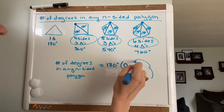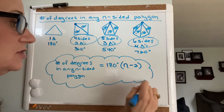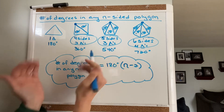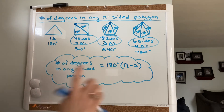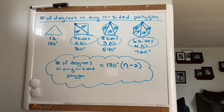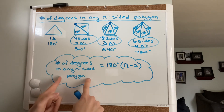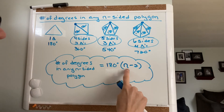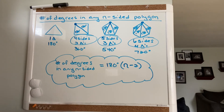This is the formula you will use to solve the homework problems I give you. This formula contains two variables: one is the total number of degrees in the polygon, and the other is the number of sides. In some problems I'll ask you how many degrees are in the polygon; in others, I'll tell you the number of degrees and ask you how many sides the polygon has.